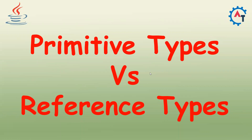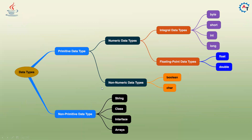In this video we will see the difference between primitive data types and reference data types. Data types are of two types: primitive and non-primitive. Under primitive you have numeric and non-numeric. Inside numeric you have integral and floating point — integral includes byte, short, int, long; floating point includes float and double. Non-numeric includes boolean and char — total eight primitive data types. Non-primitive includes string, class, interface, arrays, etc.